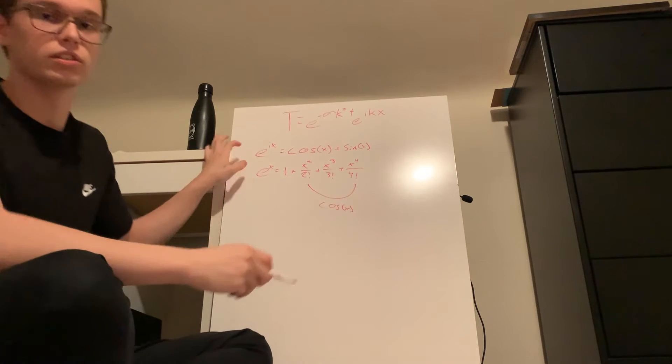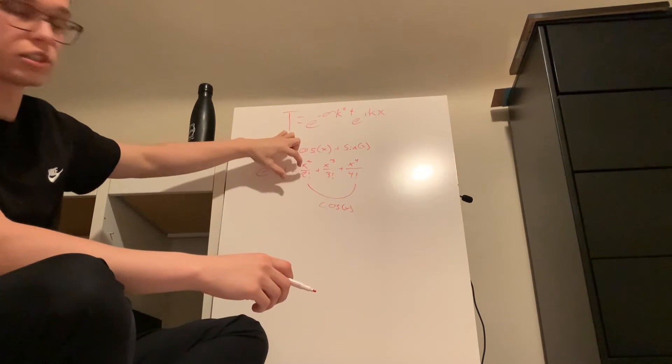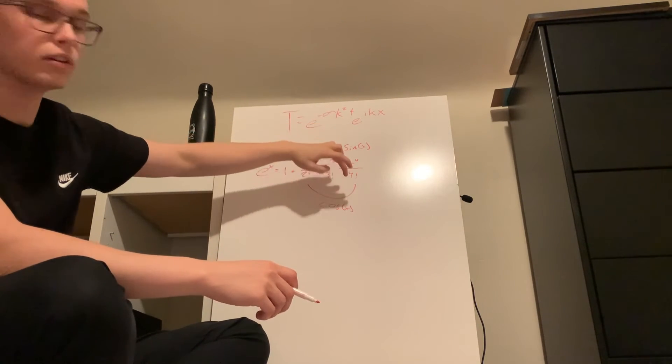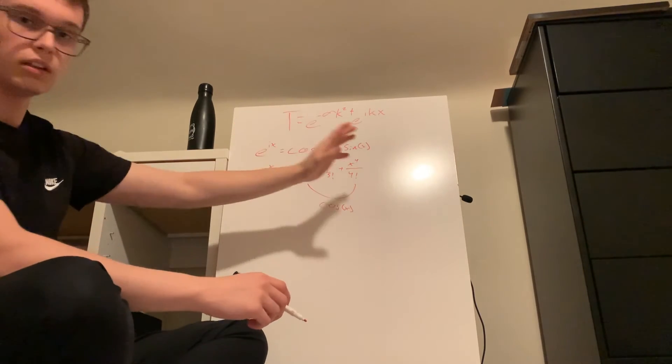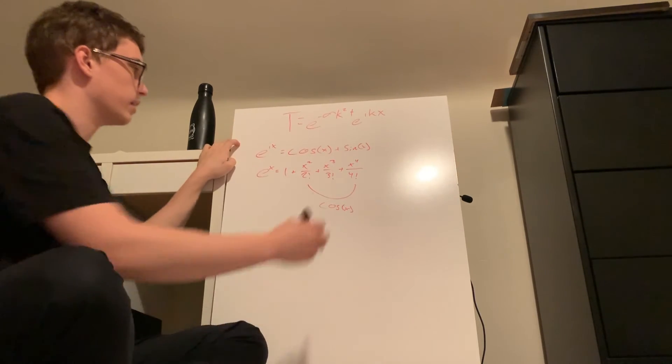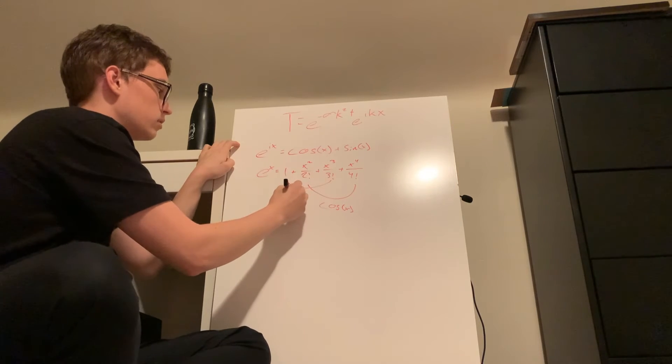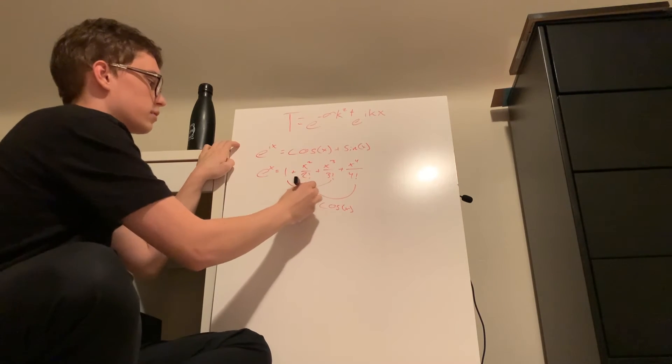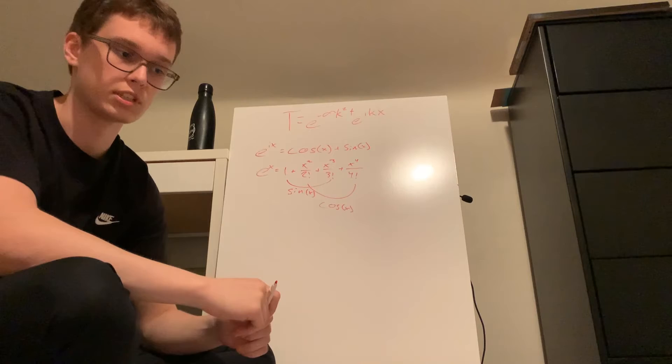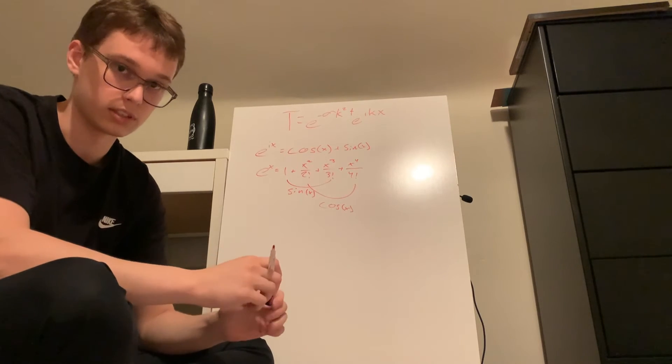And basically, the Taylor series of cosine x is equal to the odd ones. So the Taylor series of cosine x goes x squared over 2 factorial, x4 over 4 factorial, x6 over 6 factorial, and so on. And then the Taylor series of sine x basically encompasses all the odd numbers in the Taylor series.